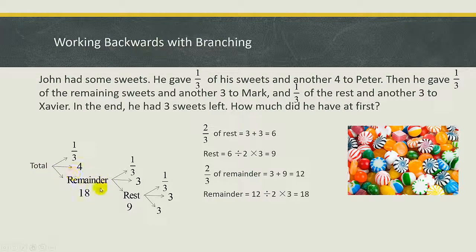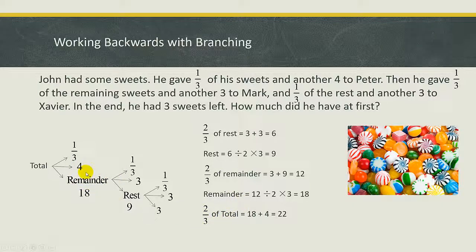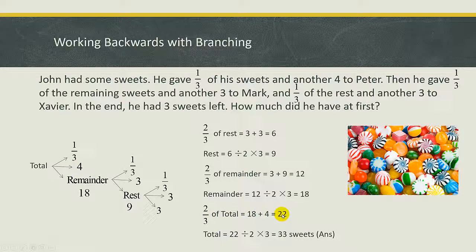Now for the final phase: we want to find the total. He gave one-third away, so the remainder represents two-thirds, because one minus one-third is two-thirds. So two-thirds of the total equals eighteen plus four, which gives twenty-two. To find the total, take twenty-two divided by two times three, which is eleven times three, giving us a final answer of thirty-three sweets.